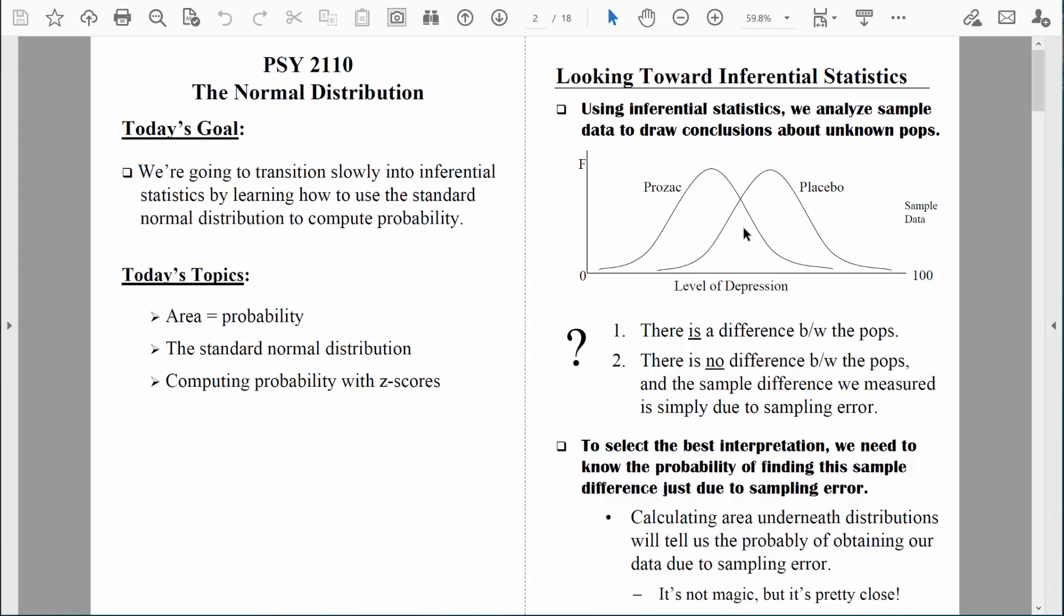So ultimately, we're left with two competing interpretations of our results. One interpretation is very straightforward. As I mentioned before, the people who took the Prozac, they have a lower depression score. So there really is a difference between the two populations I'm trying to learn about. The population of people who have been treated compared to the population of people who have not been treated. That's one potential explanation of our results.